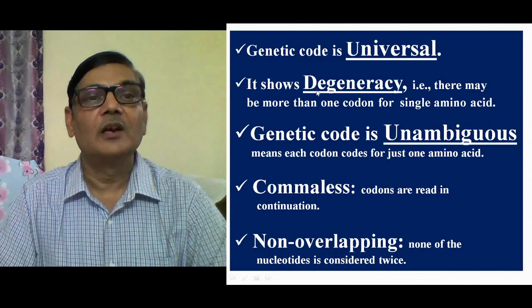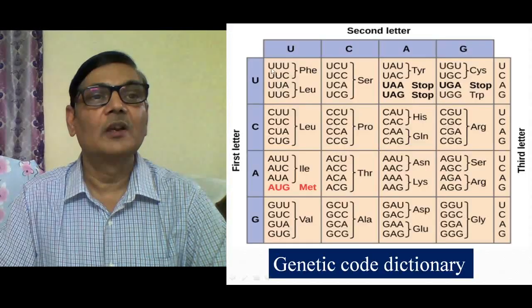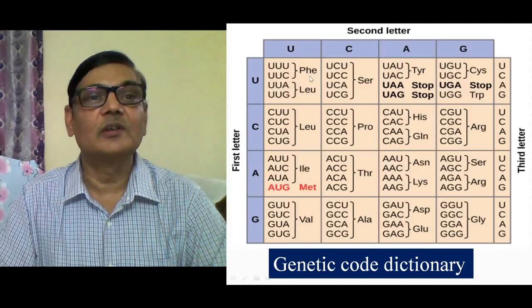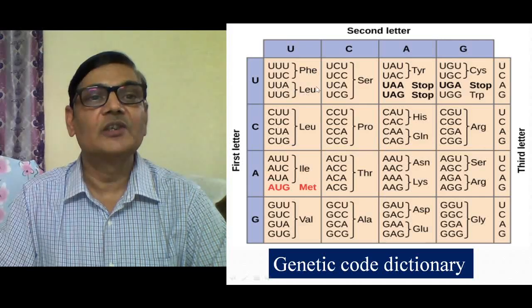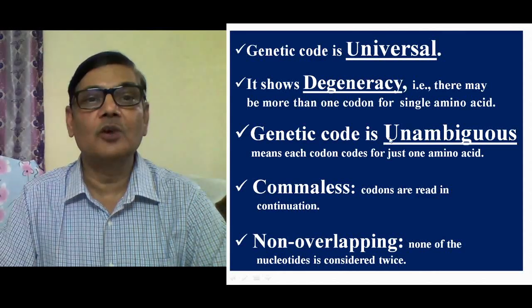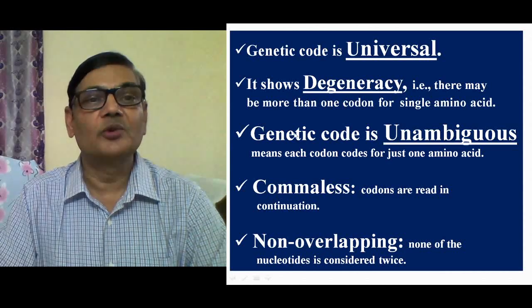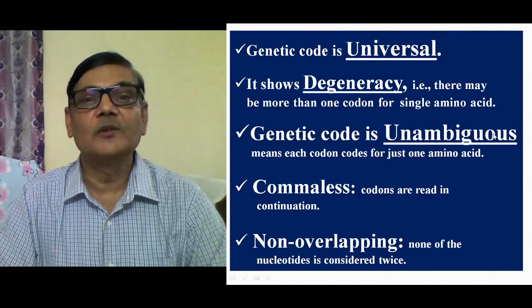The genetic code shows degeneracy, meaning there may be more than one codon for a single amino acid. For example, both UUU and UUC recognize phenylalanine, and six codons recognize leucine. This aspect is considered degeneracy. The genetic code is also unambiguous — meaning each codon codes for just one amino acid. If it is UUU, then UUU will encode only phenylalanine and no other amino acid.